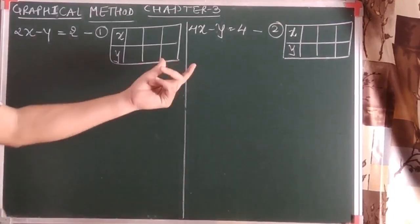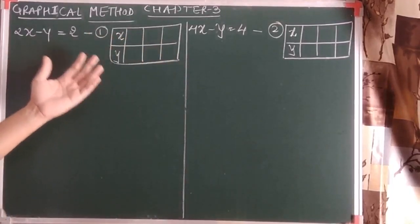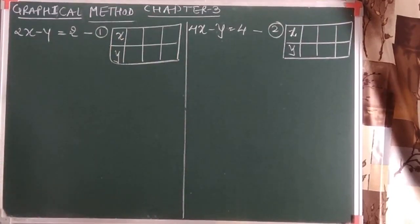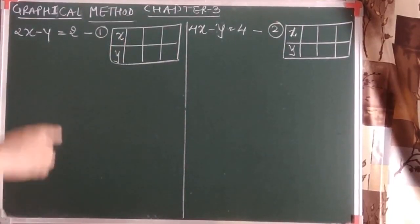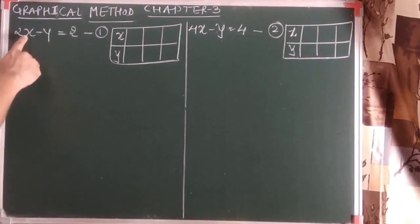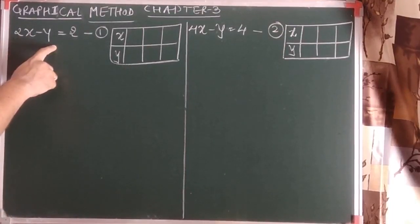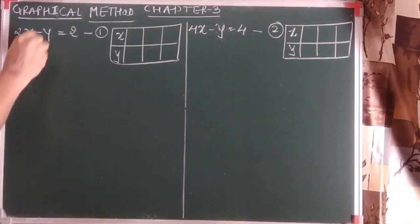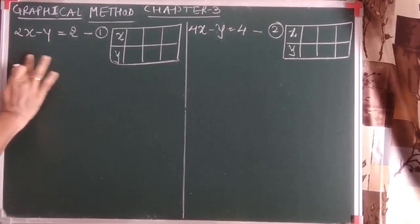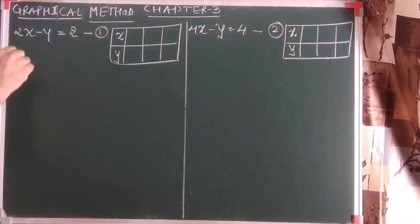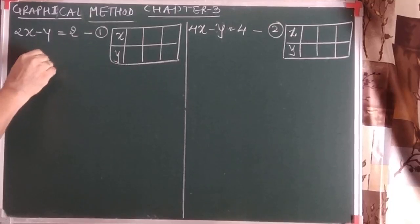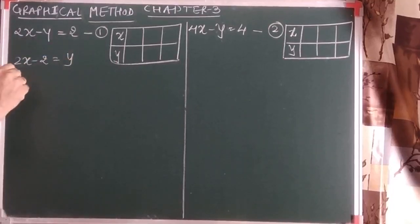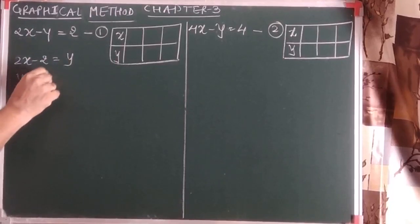To obtain the solution we use the same method discussed in ninth standard. We should remember: to find solutions for x and y, we can make any variable the subject. We will make that variable the subject which has a smaller coefficient. So we get the equation y equals 2x minus 2.